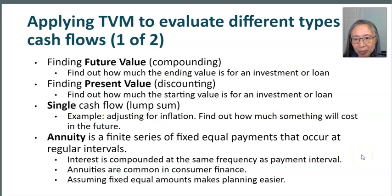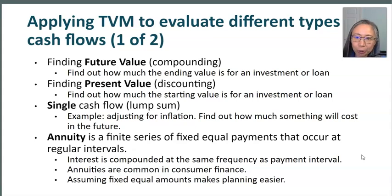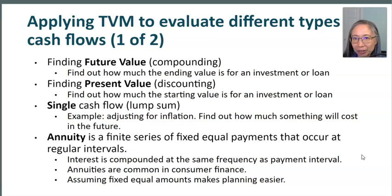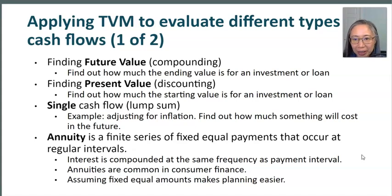Another reason to learn about annuities is that assuming equal fixed amounts makes planning easier. For example, you want to know how much you have to save per month to reach your financial goal. Assuming you're saving the same amount in the planning stage makes it a lot easier. If you try to figure out approximately how much you need per month and assume that to be a fixed amount, that makes planning much simpler.